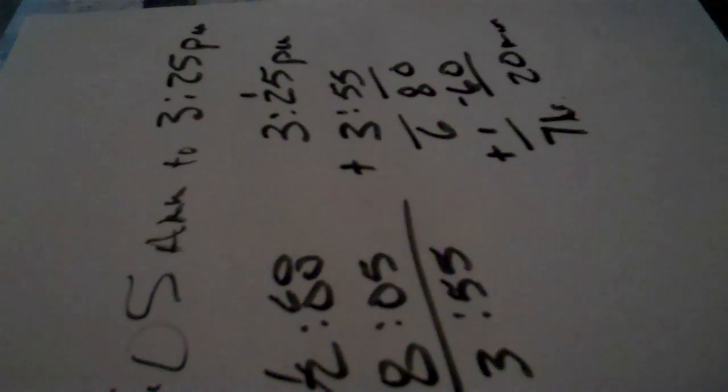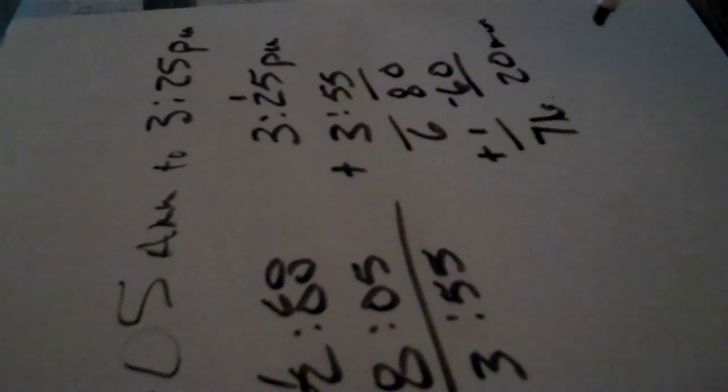So the difference between 8:05 AM to 3:25 PM would be 7 hours and 20 minutes. And so far, I think I've found that to be the easiest method.